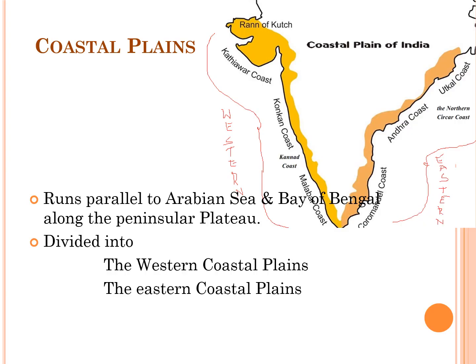The fourth physiographic region of India is the Coastal Plains. Coastal Plains run parallel to the Arabian Sea and Bay of Bengal along the peninsular plateau. They are further divided into the Western Coastal Plains and the Eastern Coastal Plains. The coastal plains stretching along the Bay of Bengal coast are called the Eastern Coastal Plain, while the one stretching along the Arabian Sea coast is called the Western Coastal Plain.